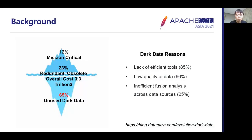Let's begin with the challenges in today's data analysis. According to a recent survey, only 12% of data are used for critical missions, and 23% of them are irrelevant and obsolete. Almost 65% of data are dark data — data that are unused and from which we cannot get any valuable information. About 85% of people believe the reason is lack of efficient tools, about two thirds think it's low data quality, and about 25% feel they lack an efficient way for fusion analysis with data distributed across various places.